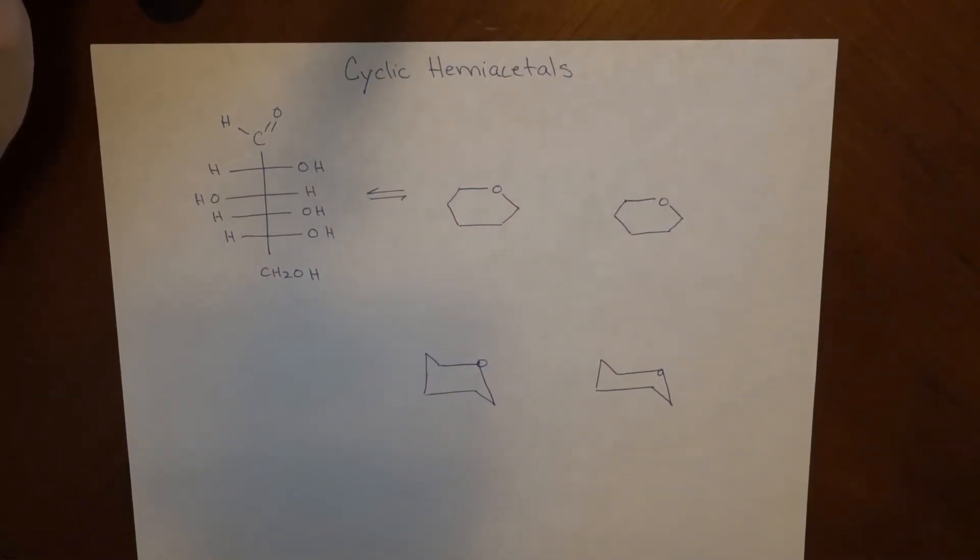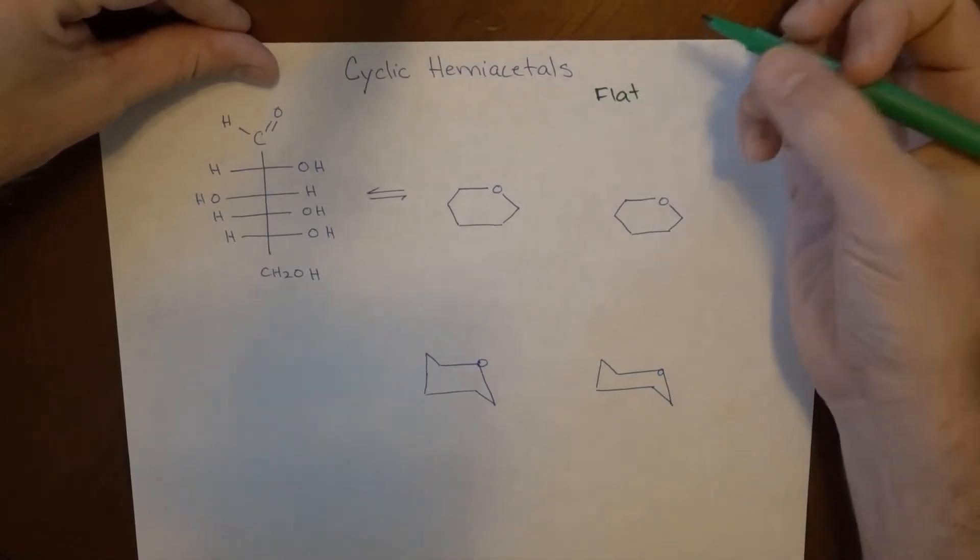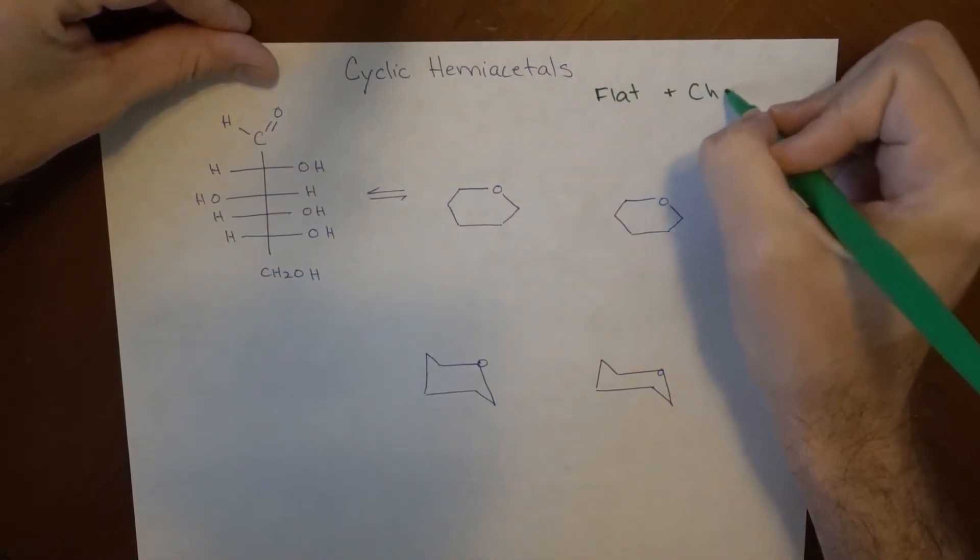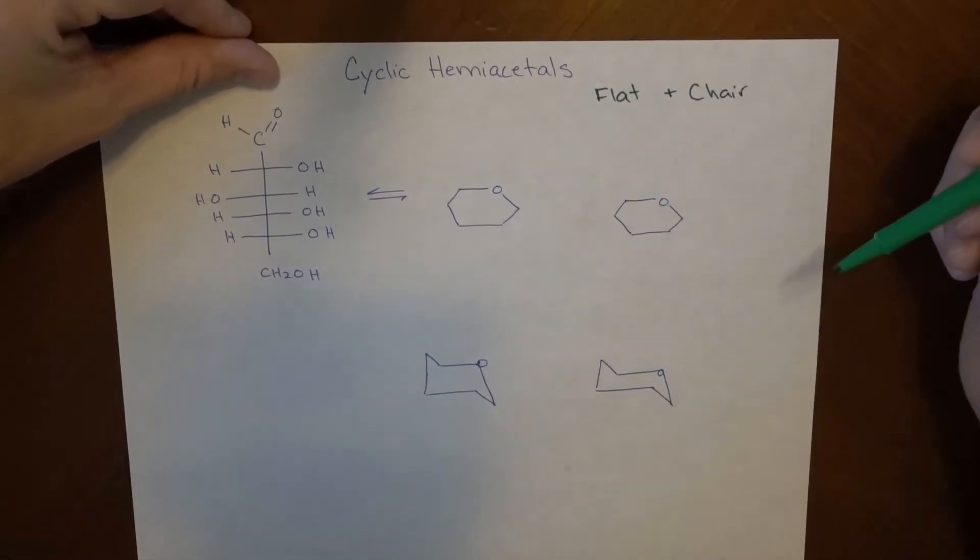This video is going to cover cyclic hemiacetals that are both flat, the way we've been seeing them, and chair conformation, because these are hexagons, but remember they're not flat planar things, they actually exist in chairs.